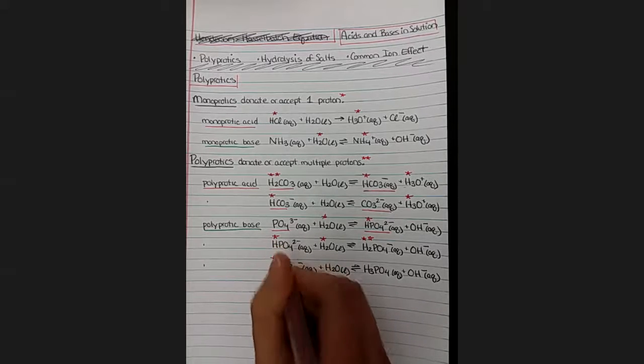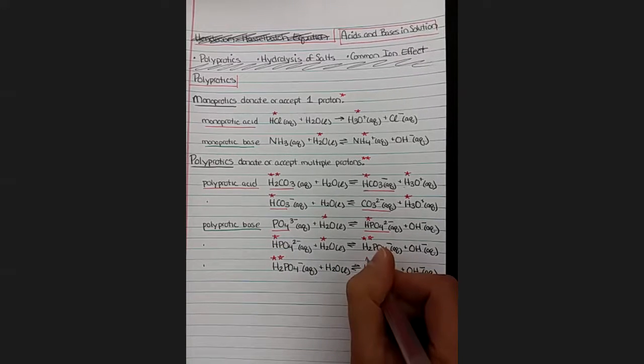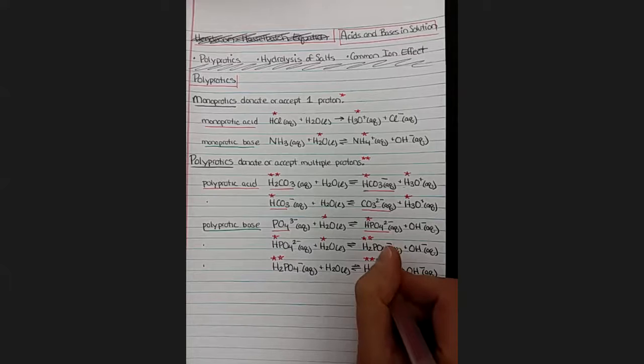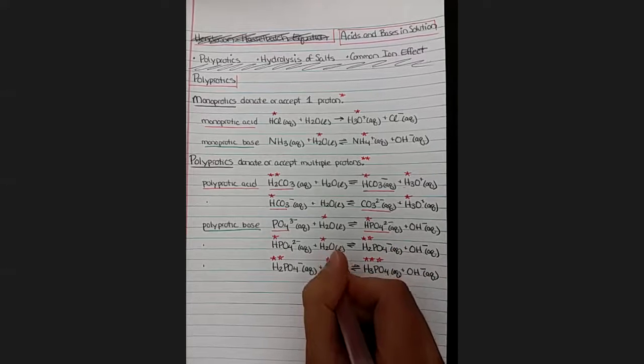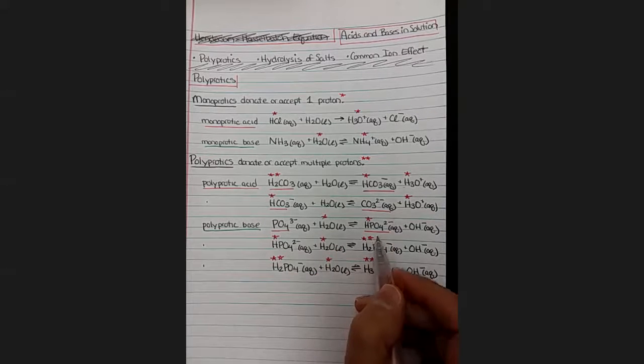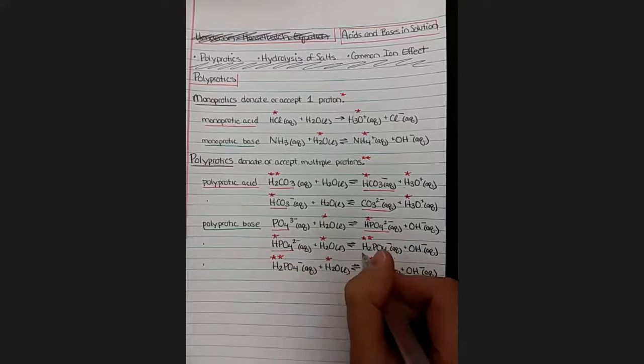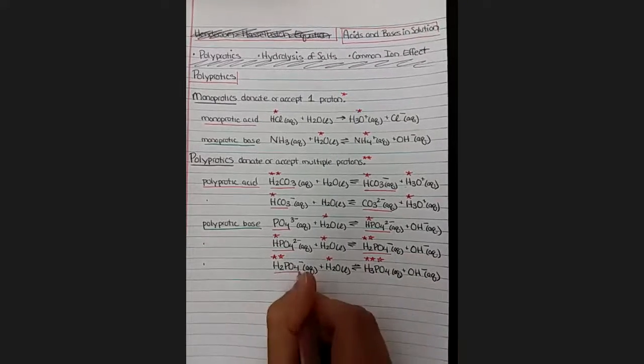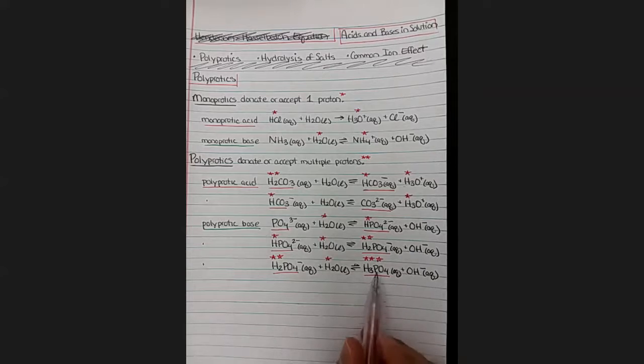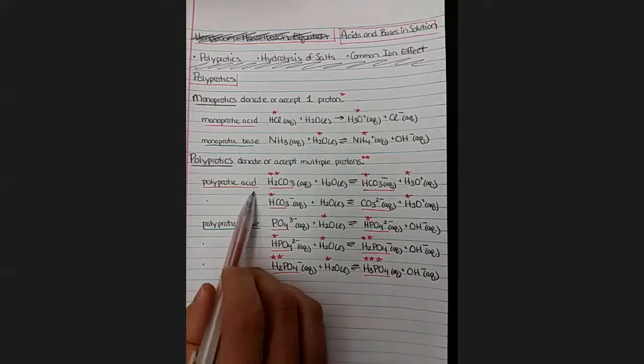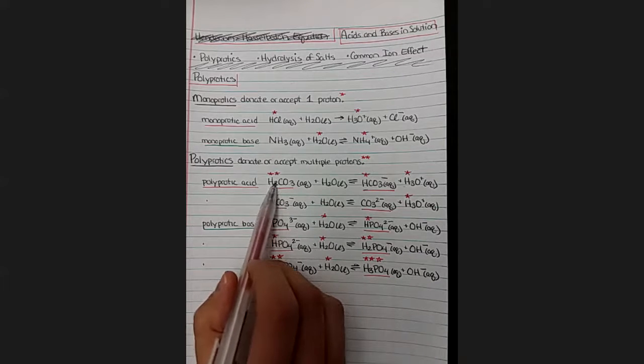Two protons becomes three protons. And that third proton came from the water. So we had phosphate to hydrogen phosphate, hydrogen phosphate to dihydrogen phosphate, and dihydrogen phosphate to phosphoric acid. So this one is triprotic. And up here, carbonate, this is diprotic for two.